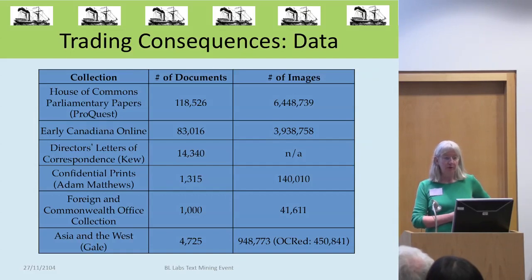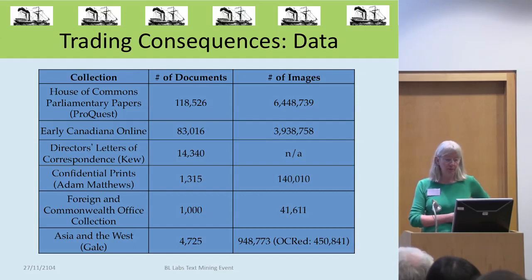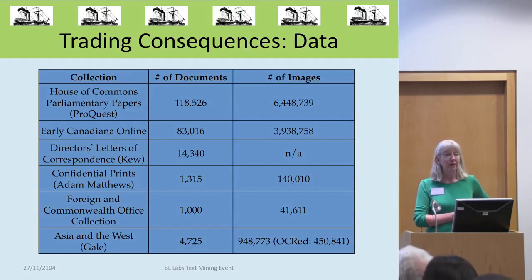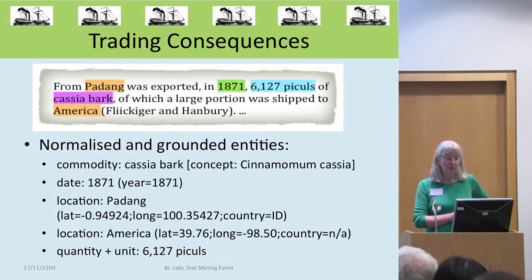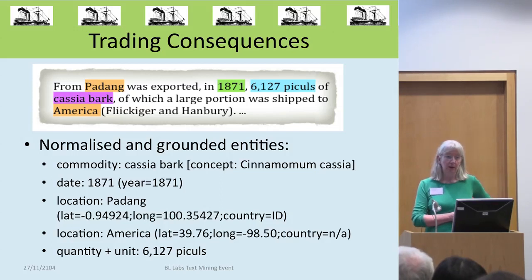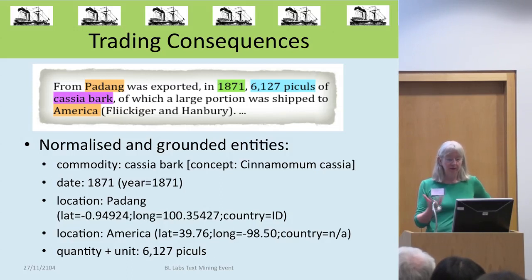The data we used for Trading Consequences — these are the collections we used and they are really quite sizeable. The biggest one was the House of Commons Parliamentary Papers. We also had the Canadiana Online and a variety of other different sources. We were trying to find various entities and relations between them. The main entity in our case was a commodity, a material that could be transported. This example has cassia bark — we find that as a commodity and then ground it to an ontology of commodities that we developed.